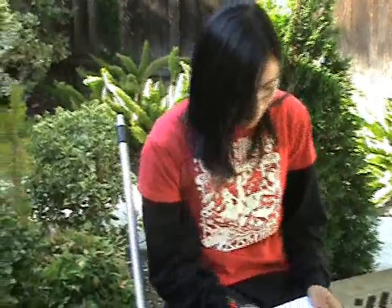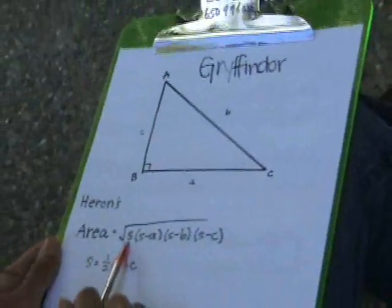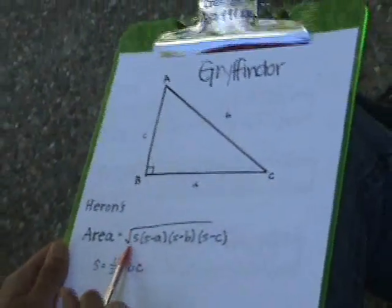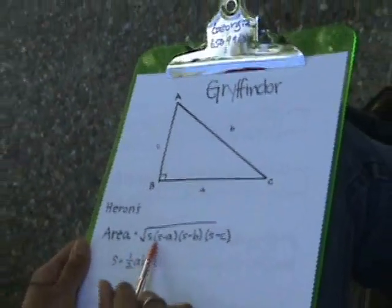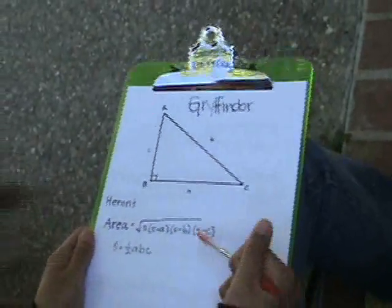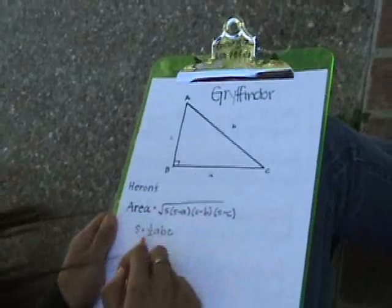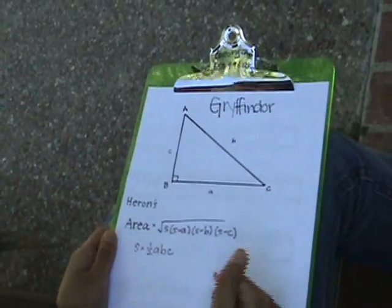Okay, team! Since Slytherin is using one plan, we have to use another one. So we need to cover as much space as we can. The area is root of S times (S minus A) times (S minus B) times (S minus C), where A, B, and C are the sides and S is equal to half of the perimeter. Now, you guys, spread out!